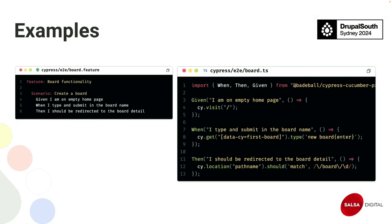Here are a few examples. In general, you write it like this: a feature name like 'Create a board', then 'Given I am on empty homepage', very similar to other tests in Gherkin language. In the backend, what is happening is that 'I am on the empty homepage' maps to cy.visit — that exact command will be called.